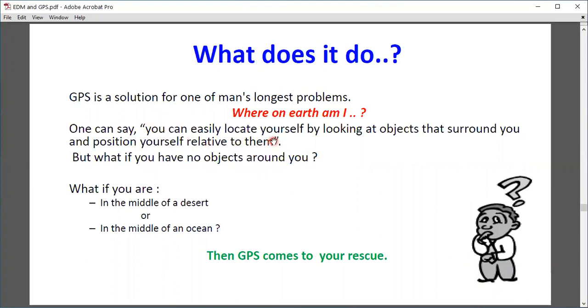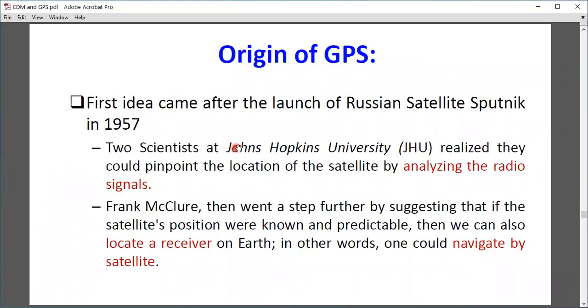GPS is a solution for one of man's longest problems. One can easily locate themselves by looking at objects surrounding them. But if you have no objects around you, what if you are in the middle of the desert or in the ocean? GPS comes to your rescue.